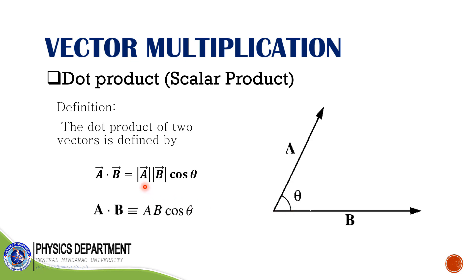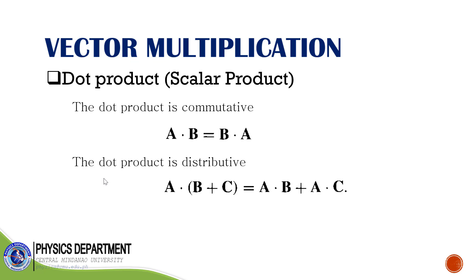Using bold letters, bold a means vector a and bold b means vector b, while a and b denote their magnitudes. Some properties of the dot product: first, it is commutative — a · b equals b · a. Second, it is distributive — a · (b + c) equals a · b plus a · c.